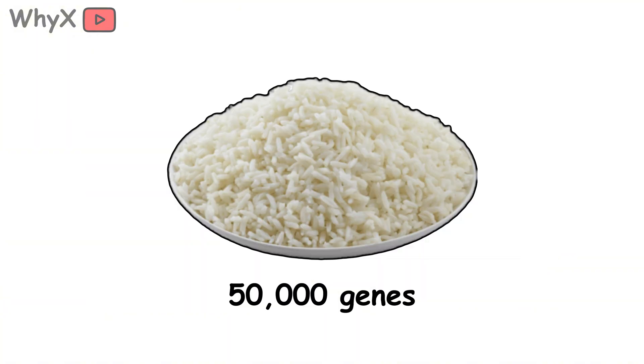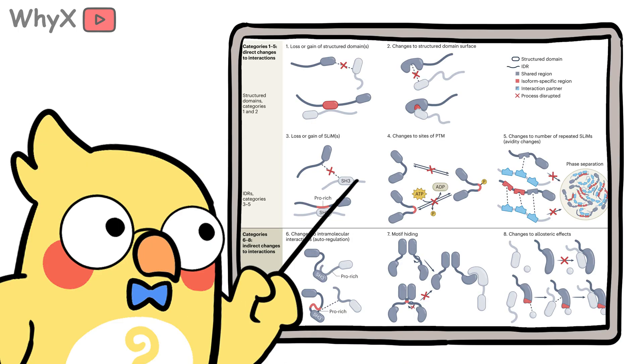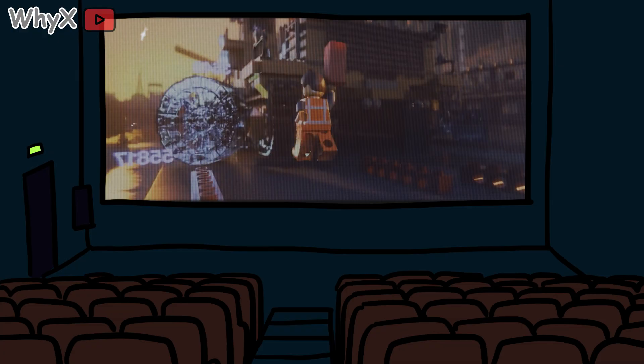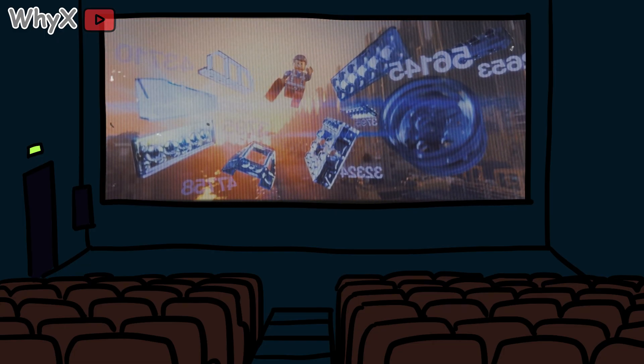For example, rice has around 50,000 genes. So complexity isn't just about how many genes you have, it's about how you use them. Humans rely heavily on alternative splicing, where one gene can be mixed and matched to produce multiple proteins. Think of it like Lego sets. A small number of pieces can build a castle, a spaceship, or a robot, depending on how you snap them together.